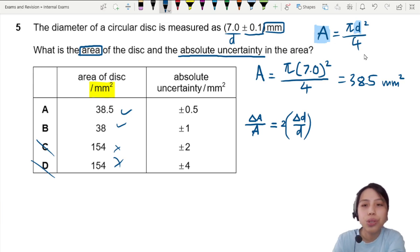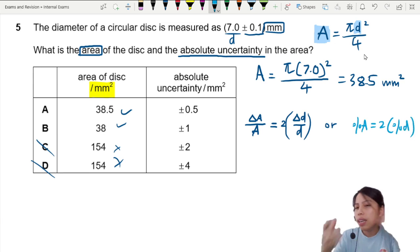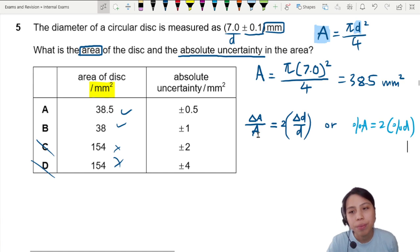Other methods you may come up with - an alternate way of writing this is in terms of percentage uncertainty. So percentage uncertainty in A is two times the percentage uncertainty in D. It's the same thing. But instead of percentage on the left, we use fraction.